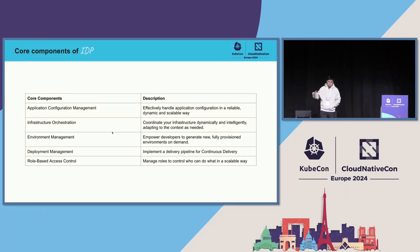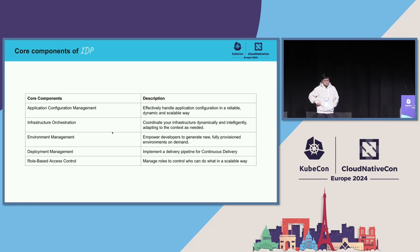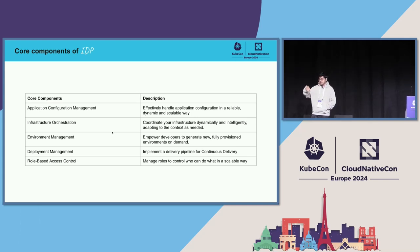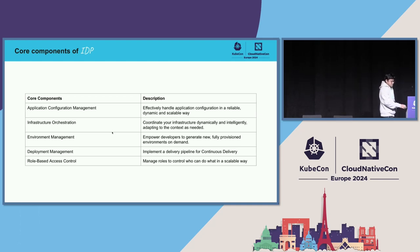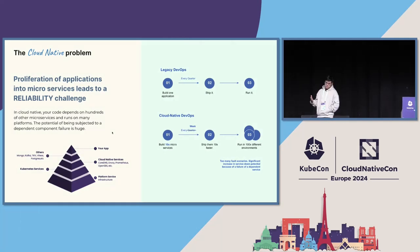The core components of an IDP include application configuration management, infrastructure orchestration, environment, deployment, and role-based access control. These are the basic pillars, and you might extend them on a more granular level for each component. This is something we're already familiar with in platform engineering. But what we're less familiar with is how to approach this entire scenario through a chaos engineering delivery model.